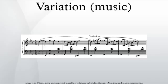Joseph Haydn specialized in sets of double variations, in which two related themes, usually minor and major, are presented and then varied in alternation.